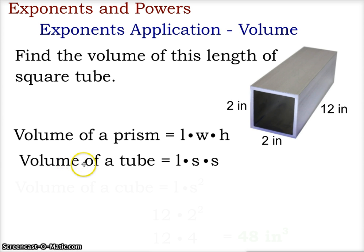So the volume of the tube becomes length times side times side, which we can use an exponent to do length times side squared, or length times side to the second power.